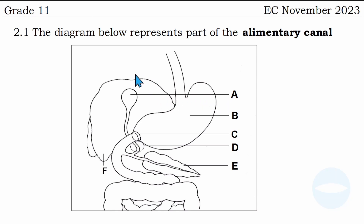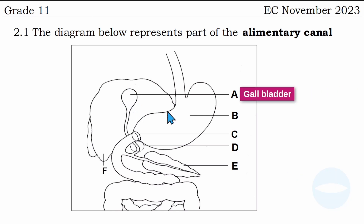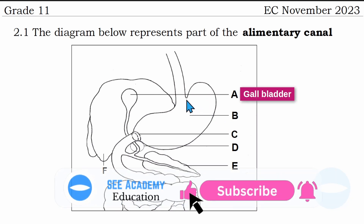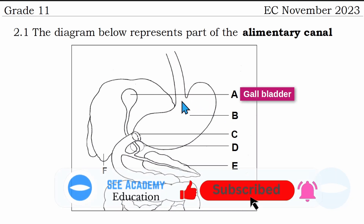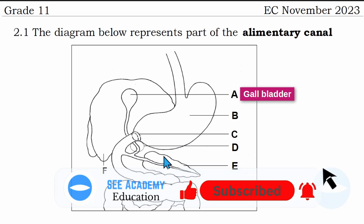If you see here, we have a liver, and just next to the liver is the gallbladder. So number A is the gallbladder. And then number B is the stomach. If you see here, this is the esophagus. The esophagus transports food to the stomach, and this one here is the stomach.